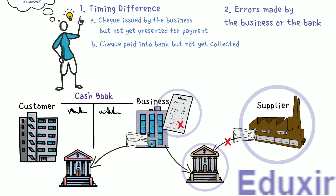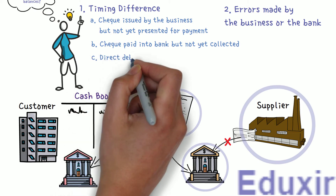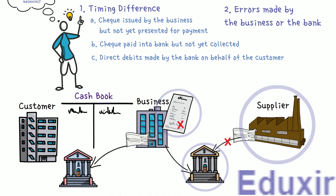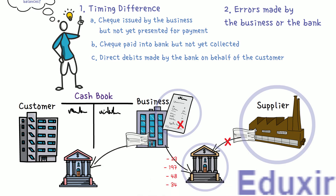The next reason is direct debits made by the bank on behalf of the customer. Sometimes the bank deducts amounts for various services from the business bank account. The business will not be aware of these deductions until the bank statement is received. Examples include check collection charges and interest on overdraft. Since the business does not know about these direct debits, they will not be recorded in the cashbook, causing a difference.